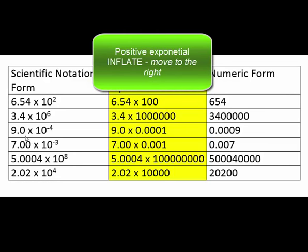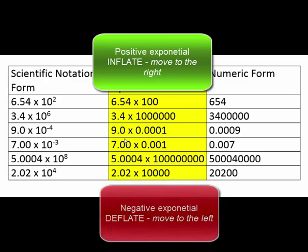The next example is 9.0 times 10 to the minus fourth. Remember, negative exponentials produce really small numbers — numbers between 0 and 1. Here, 10 to the minus fourth corresponds to .0001. So effectively 9 times .0001. In this case you're not inflating 9, you're deflating it. So the decimal should move to the left four places, because the exponent is negative 4, producing .0009.